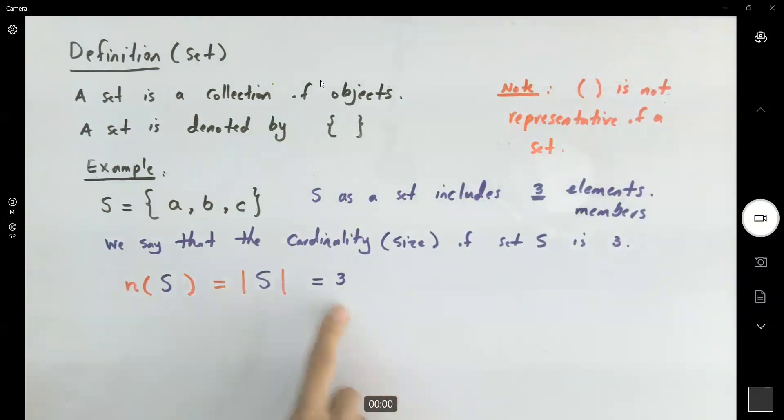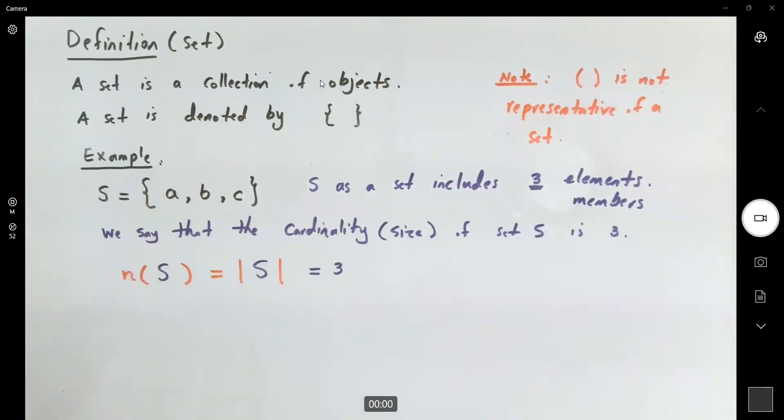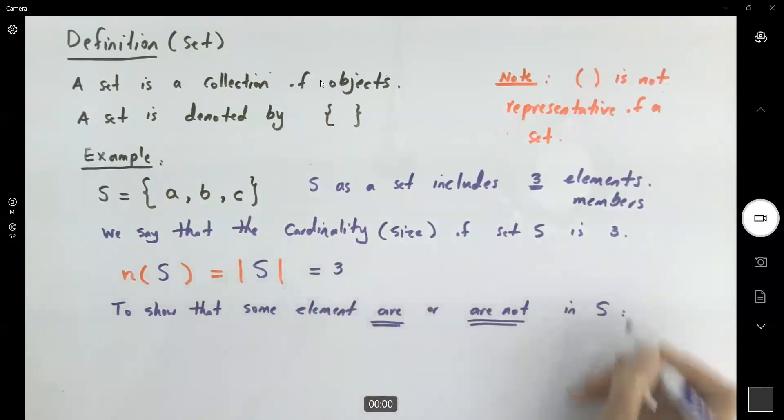It says that, how many members are in this set? Now that we know we have three members in this set, we're going to use the symbol belongs to, to say that mathematically, these are members of this set. I write it this way to show that some elements are or are not in S. We follow the following representation.